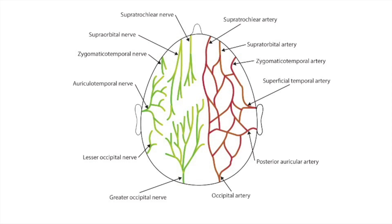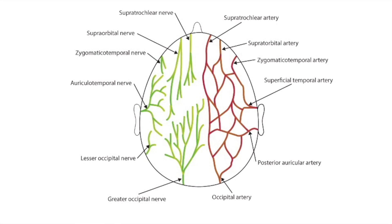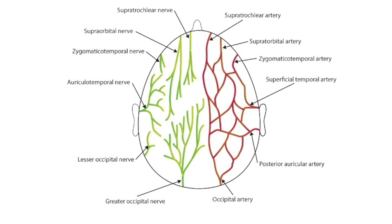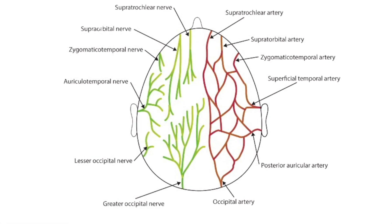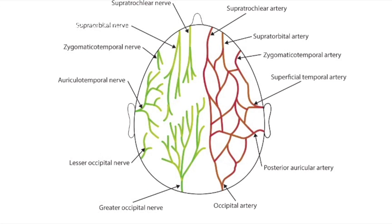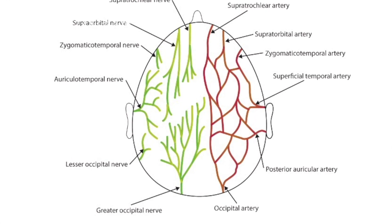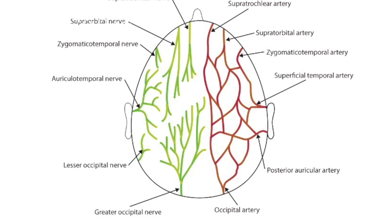From front to back: supratrochlear, supra-orbital, zygomatico-temporal, auriculo-temporal, lesser occipital, and greater occipital — together these supply the entire half of the scalp on that side.